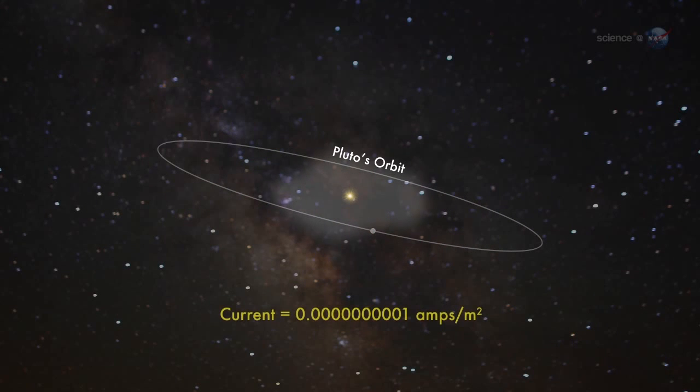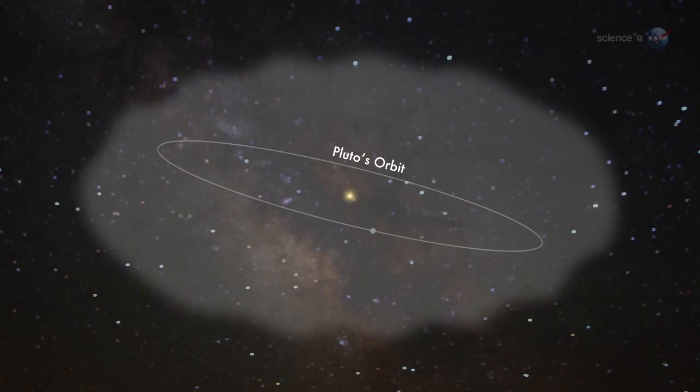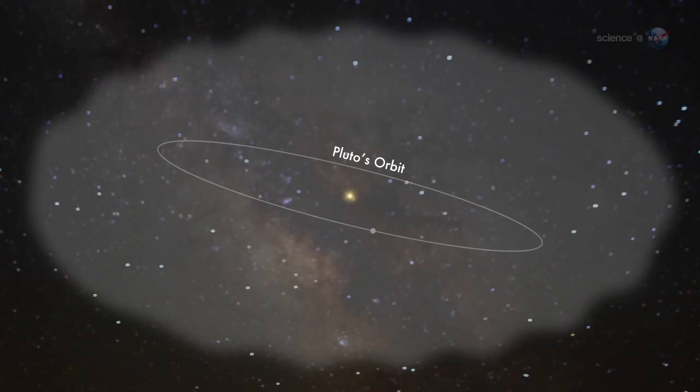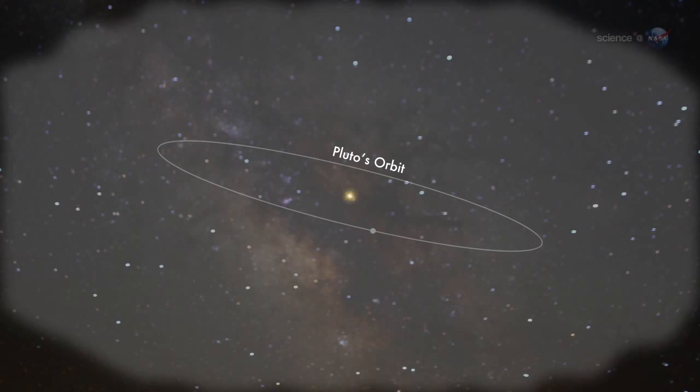The current itself is small, only one ten-billionth of an amp per square meter. But there's a lot of it. The amperage flows through a region 10,000 kilometers thick and billions of kilometers wide. Electrically speaking, the entire heliosphere is organized around this enormous sheet.